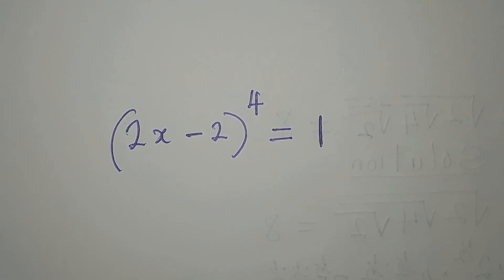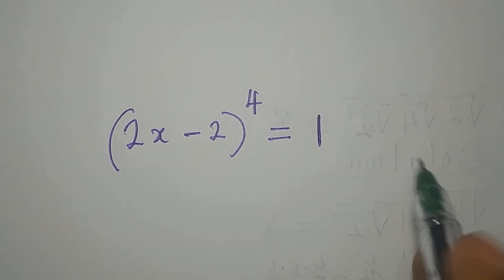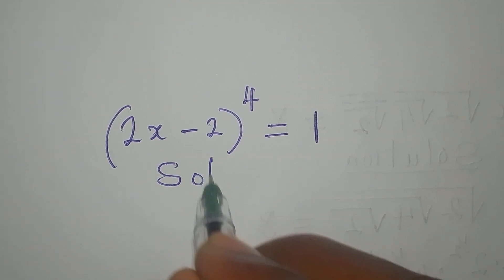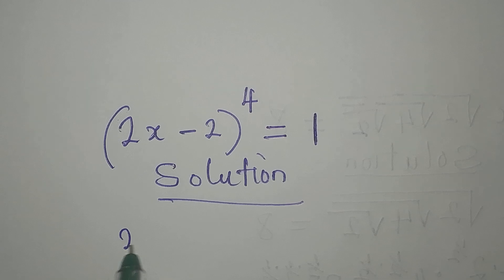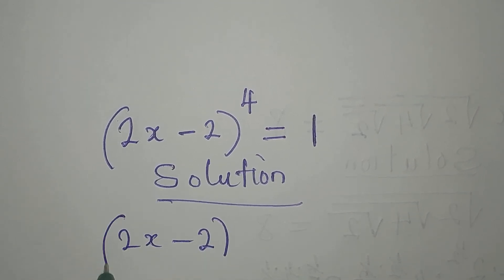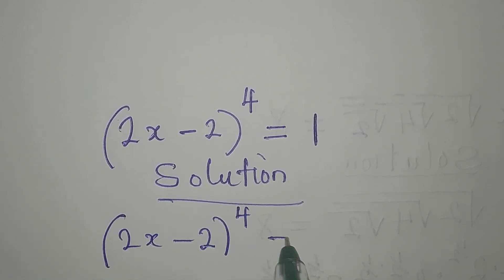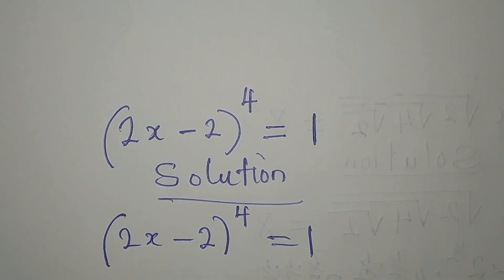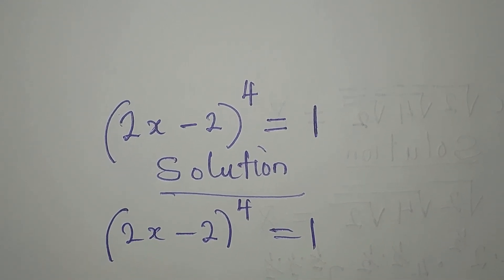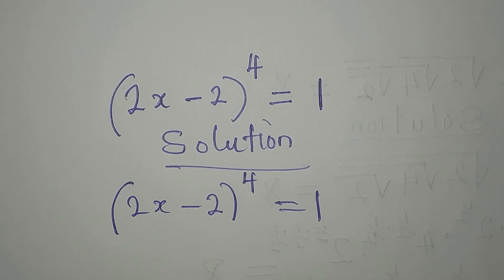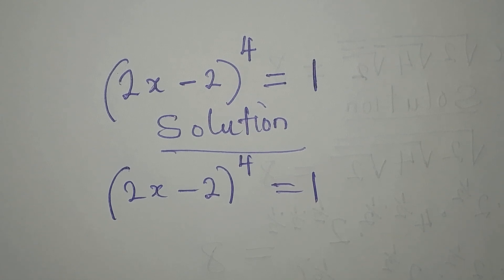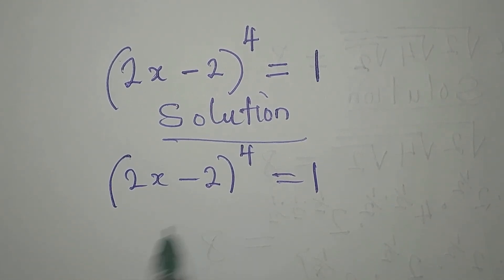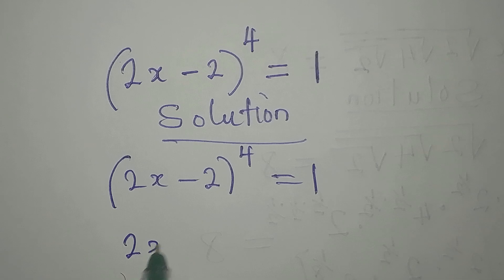Hello everyone, we want to provide a complete solution to this problem. We have x minus 2 to the power of 4 equals 1. If you are new to my channel, please subscribe. If you are not new and have not subscribed, what are you waiting for? Subscribe so you can have more access to my math videos.